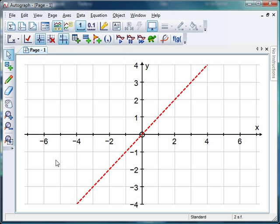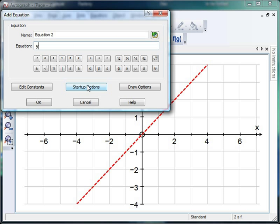Now the first approach is to use Autograph's excellent constant controller. So to do this we are going to enter an equation but instead of putting numbers we're going to put the classic y equals mx plus c.